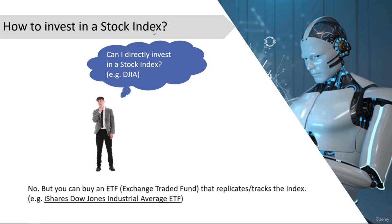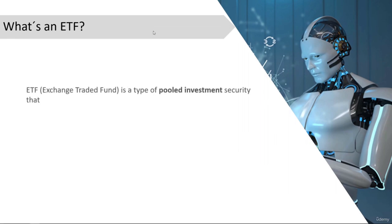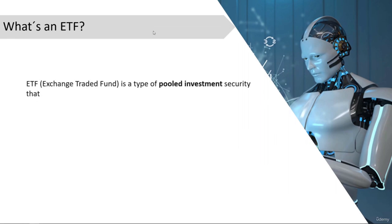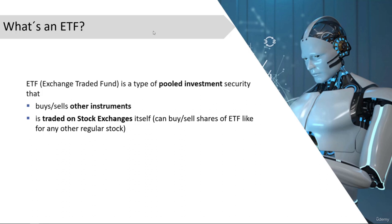iShares is the brand of one ETF provider, but there are many different providers and managers. An ETF, like any other fund, is a type of pooled investment security that buys and sells other instruments — typically stocks, but also fixed income, commodities, and more. Most importantly, an ETF is itself traded on stock exchanges, so you can buy and sell shares of an ETF like any regular stock — that is the key difference from a mutual fund. Mutual funds are typically not tradable throughout the day.